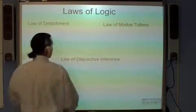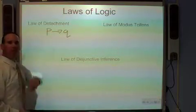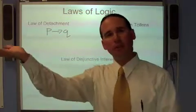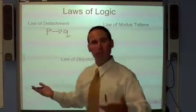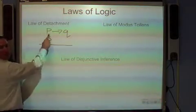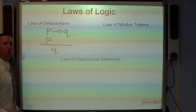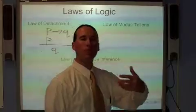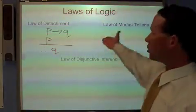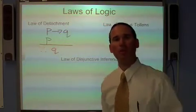Here's what the law of detachment says. If you know that this conditional statement is true, if you have P, then you have Q. So if it rains, then my shoes get wet. And you find out that you do have P, in other words, it does rain. Well, there's a very simple conclusion to be made. If it rains, then my shoes get wet. It does rain, therefore my shoes get wet. We can conclude Q. If the hypothesis is true, the conclusion must be. And we just call that the law of detachment.